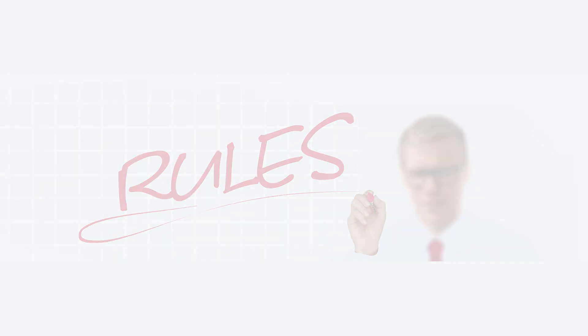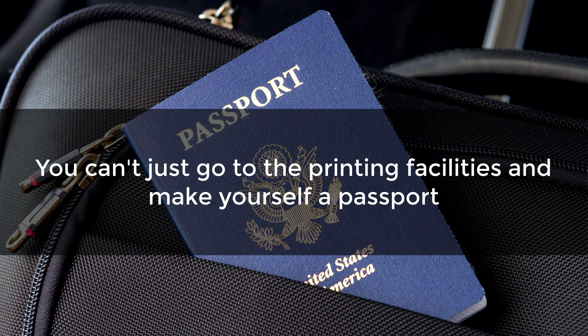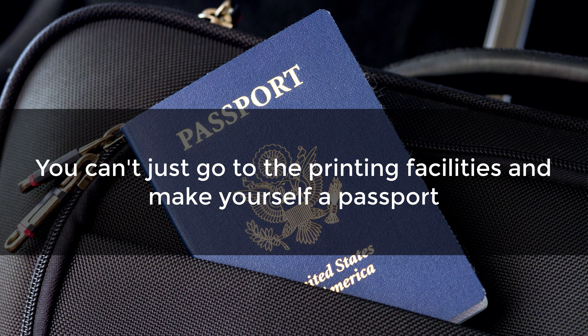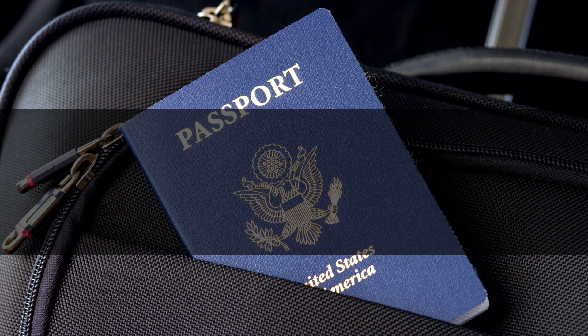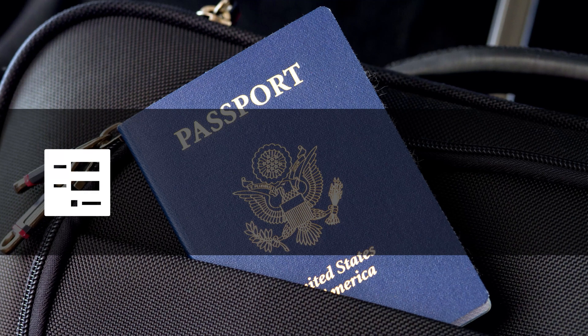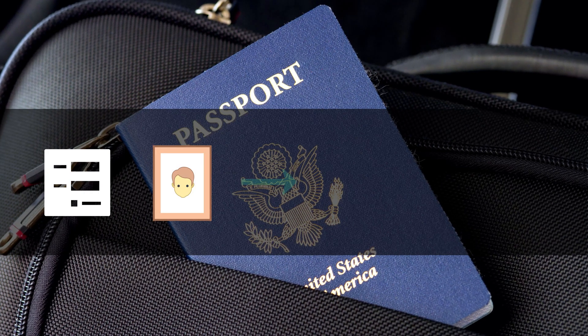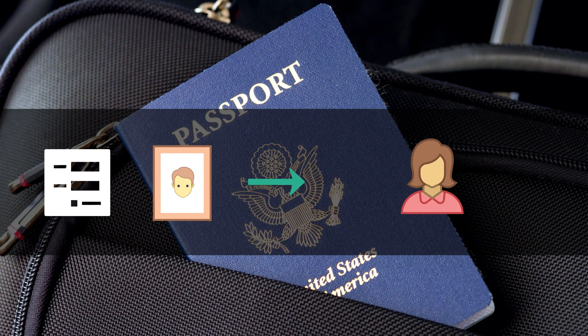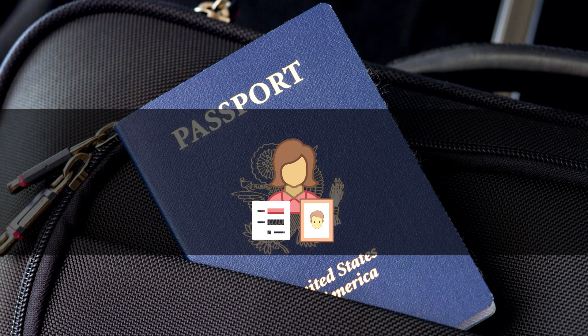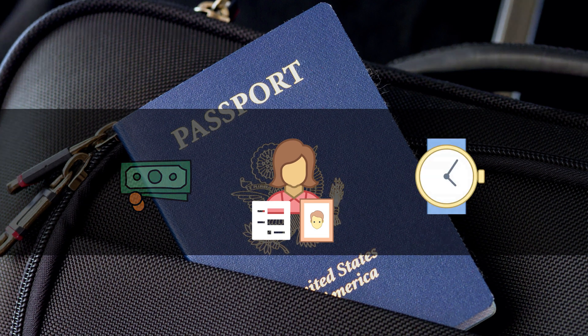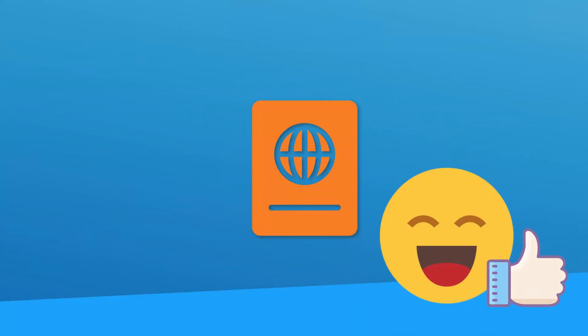For example, if you're applying for a passport, you can't just go to the printing facilities and make yourself a passport. There's a certain procedure that you have to follow. You fill out the forms, you take a photo, you take these documents to a passport office, and you talk to the lady and hand in your documents, you pay the fee, and then you wait. You have no idea what's happening behind the scenes once you hand in your documents. The system took your inputs, it's working in the back, and when it's ready, it'll produce your passport and give it to you. This is exactly like how an API works.